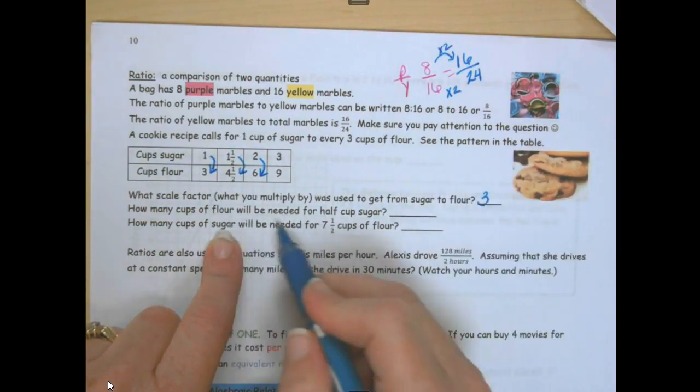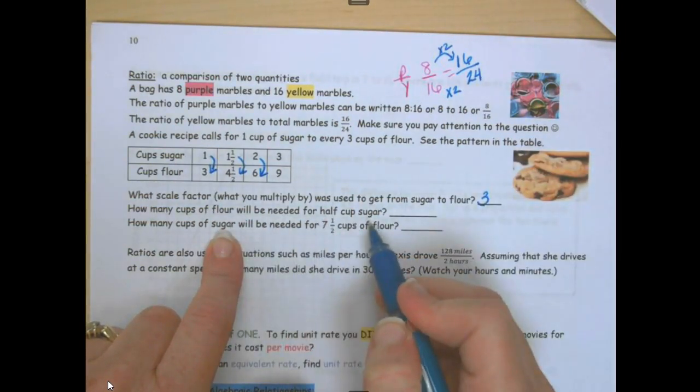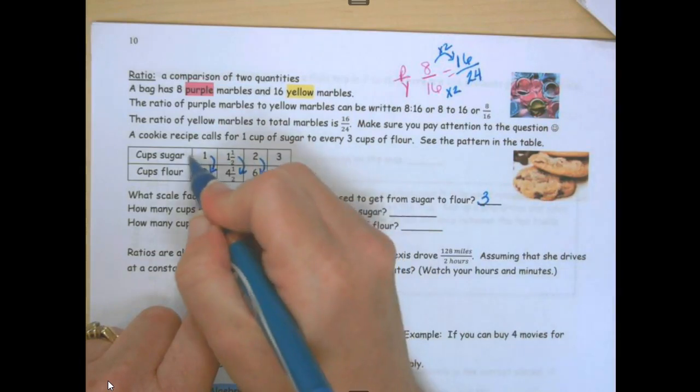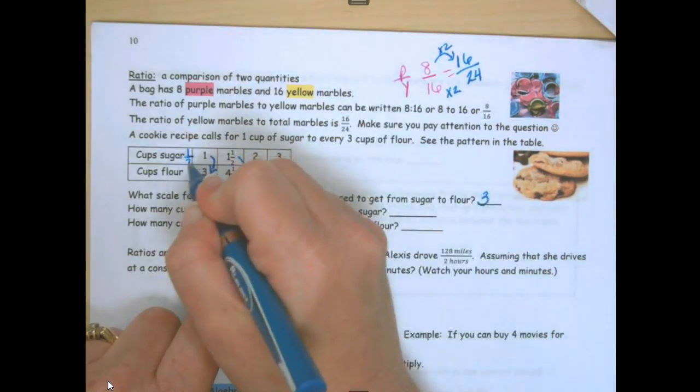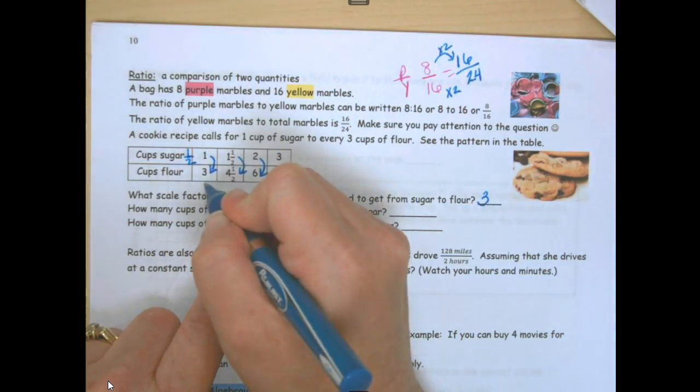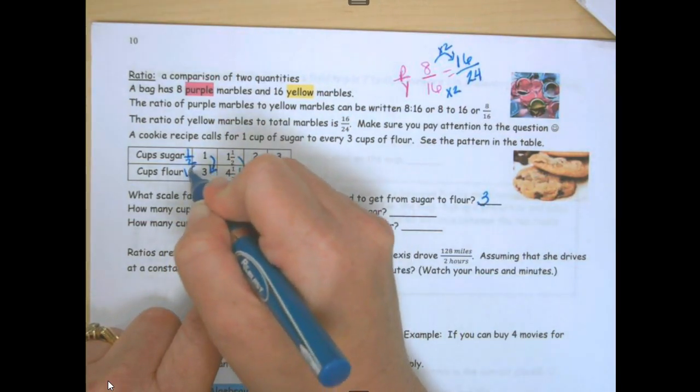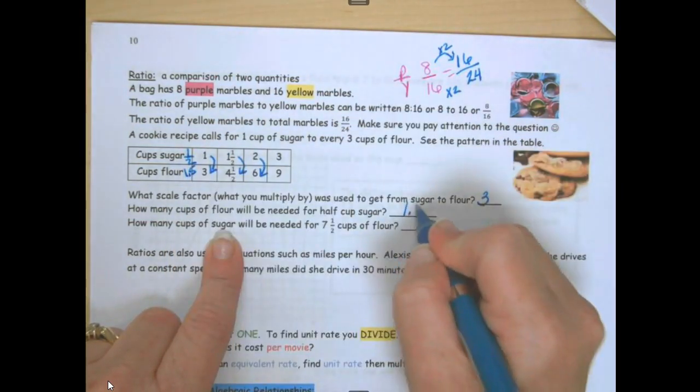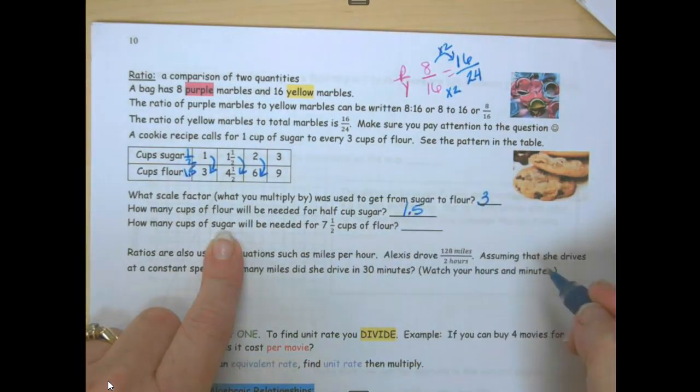How many cups of flour will be needed for 0.5 cups of sugar? So, half the sugar, right here, if you take half, what's half of 3? 1.5. So this is 1 and 5 tenths, or 1.5 cups of flour.